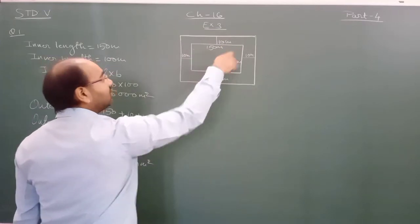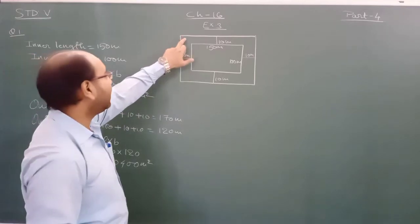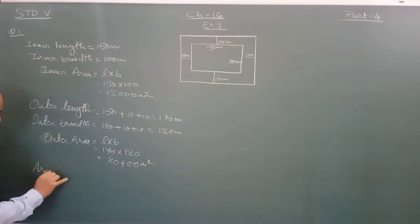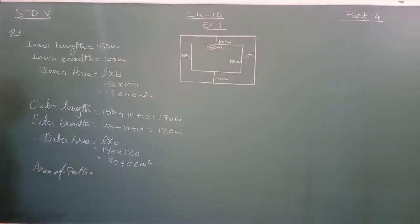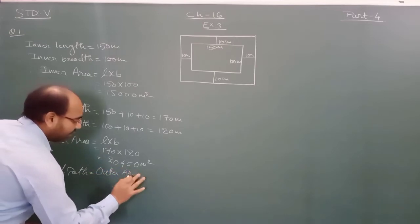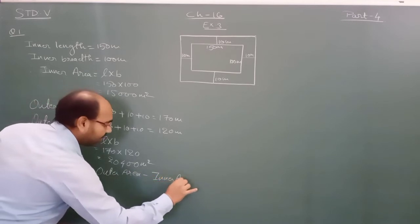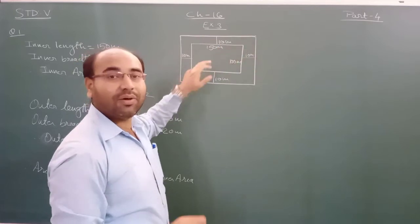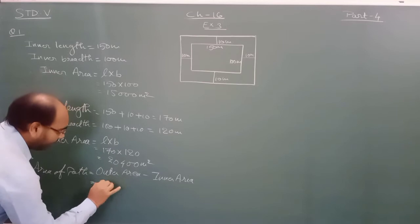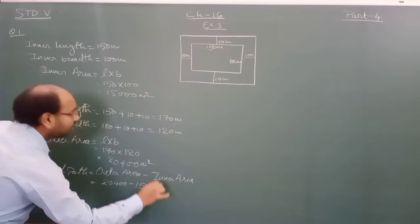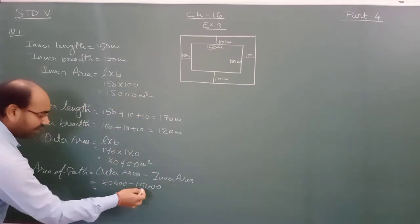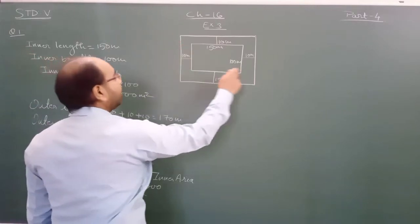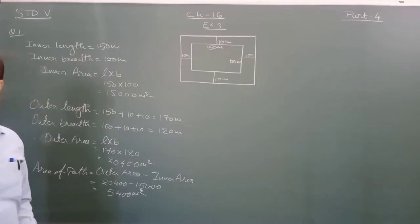Both the inner area and outer area are found. Now to find the area of the path, we always use: area of path equals outer area minus inner area. So the outer area is 20,400 and the inner area is 15,000. So 20,400 minus 15,000 equals 5,400. Therefore area of path is equal to 5,400 m².